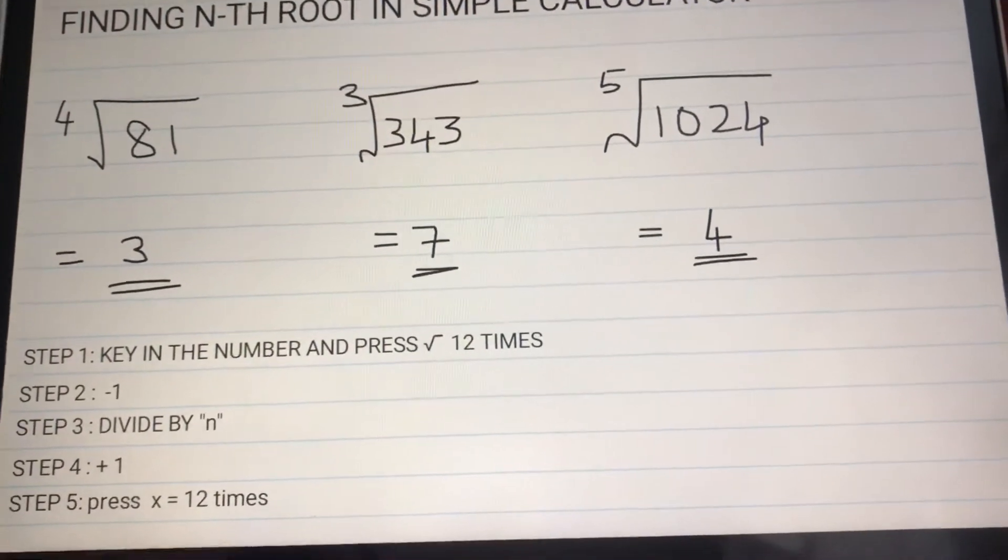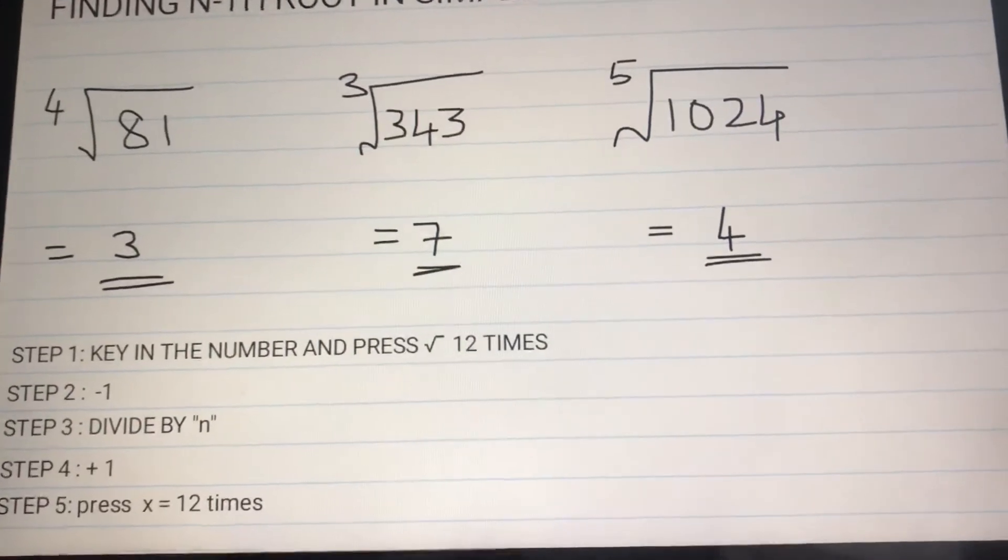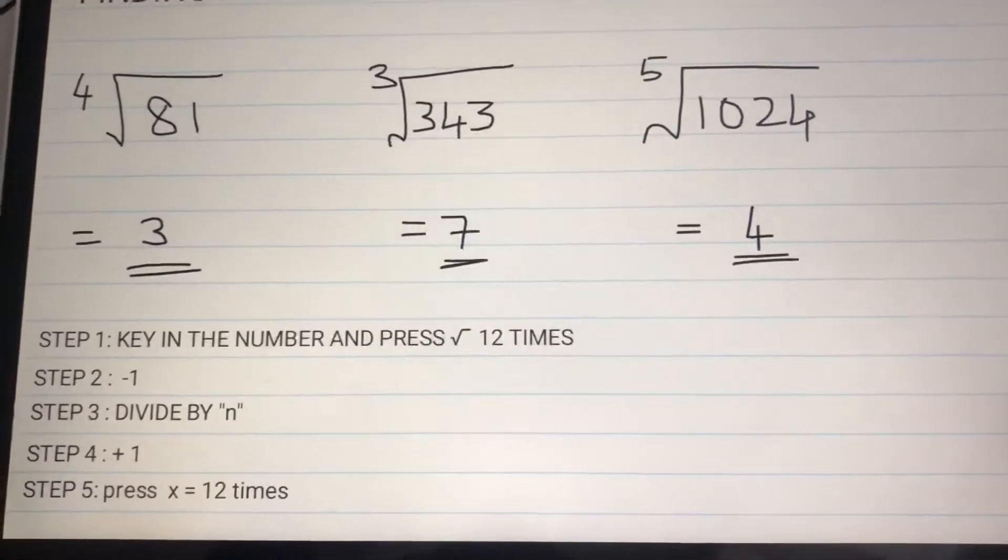Step three: divide it by n. Now what is n? n is the nth root. If it's fourth root, divide by 4; if it's fifth root, divide by 5; if it's tenth root, divide by 10. Step four: add one. And final step is press multiply and equals 12 times.